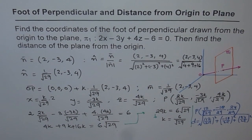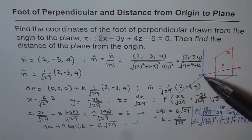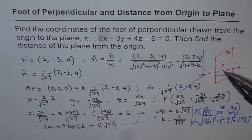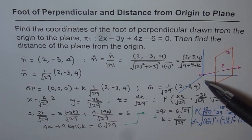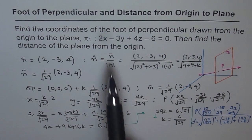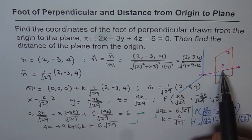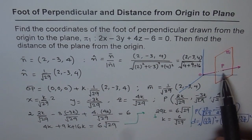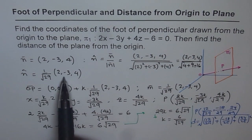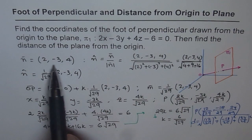Let us summarize how we solved this question. The question was to find the coordinates of the foot of perpendicular drawn from the origin to plane π₁, where we find point P on the perpendicular such that line OP is perpendicular to the plane. Since the plane is in scalar form, the normal to the plane is (2, -3, 4), which is the direction vector for line OP.